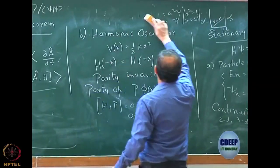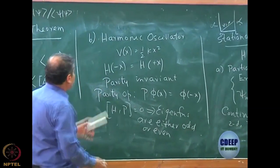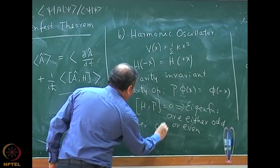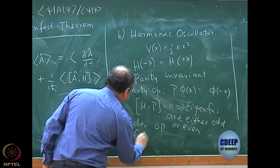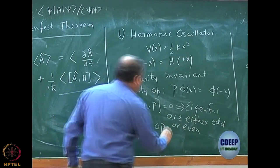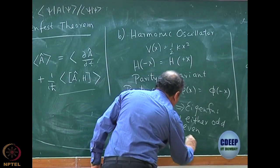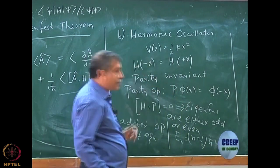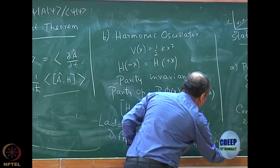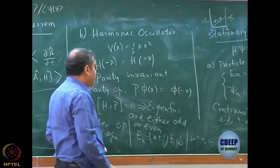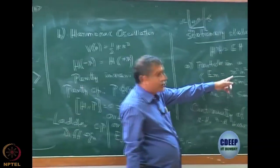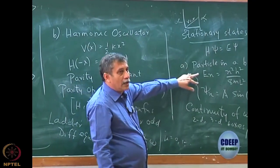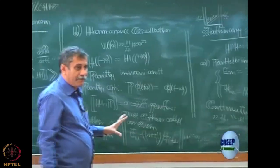We solved the harmonic oscillator problem by two means: by the ladder operator method, and by actual differential equation solution. The energy quantum number is (n + 1/2) h-bar omega, where omega is the oscillator frequency, and n starts from 0, 1, 2, 3, etc. Importantly, since E depends linearly on n here, the spacing between energy levels is constant, unlike particle in a box where E depends on n squared and the spacing keeps increasing.